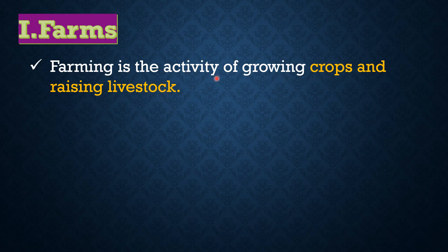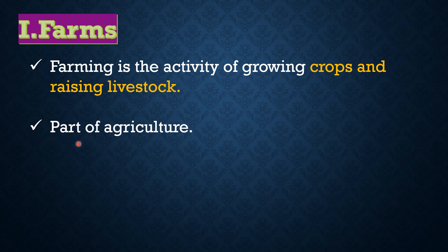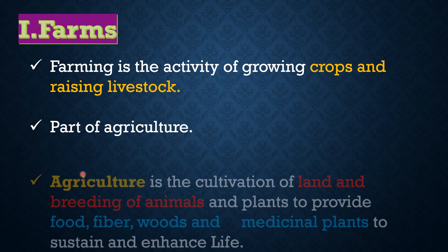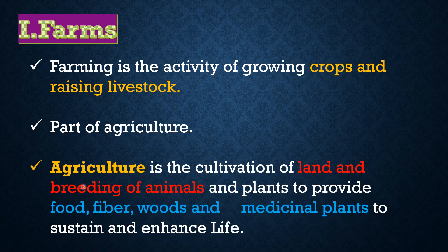Farming is the activity of growing crops and raising animals. Agriculture is the cultivation of land and breeding of animals.